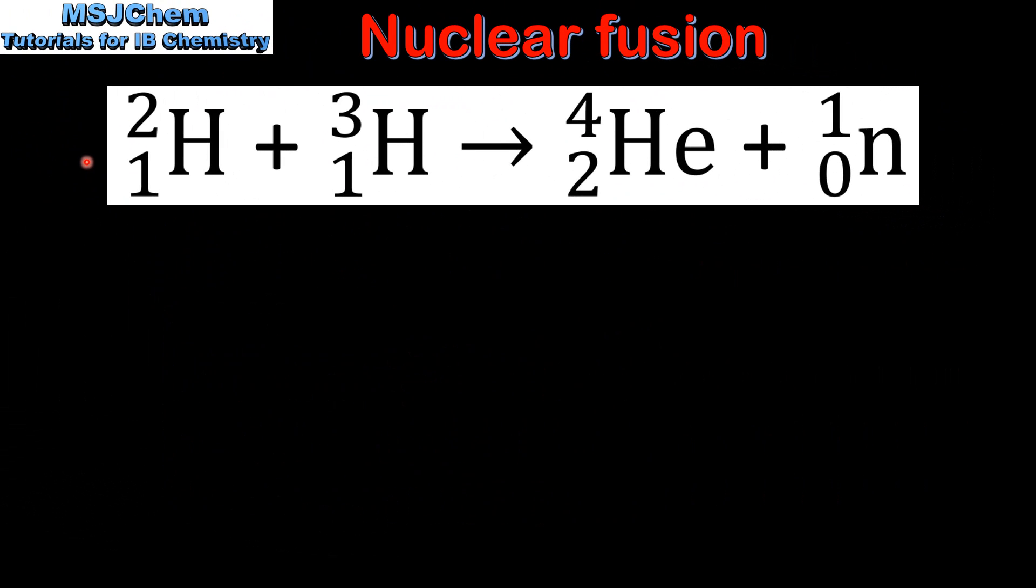Here we have the nuclear equation for the fusion of deuterium and tritium to form helium and a neutron. Nuclear equations must be balanced. The sum of the mass numbers and the atomic numbers must be the same on both sides of the equation.